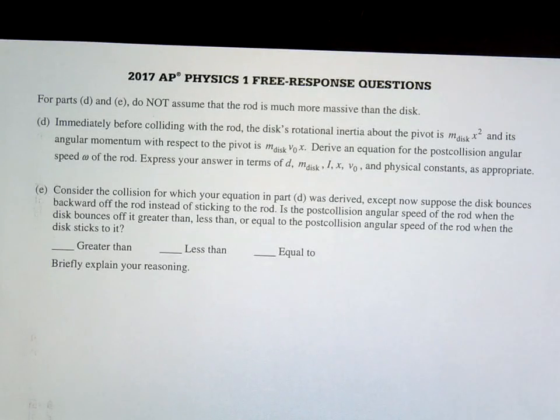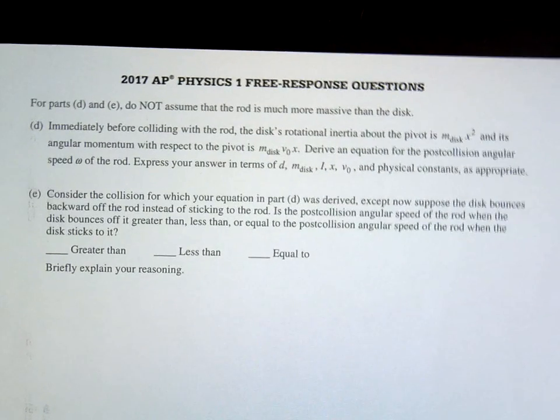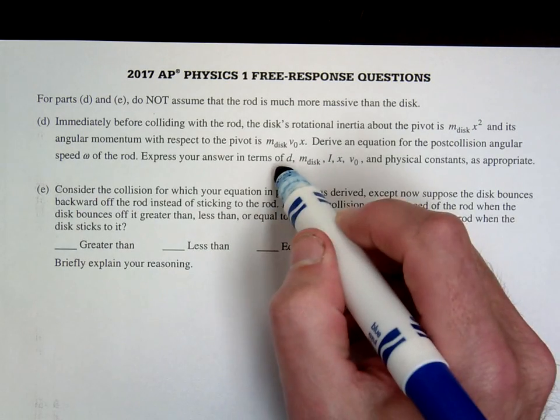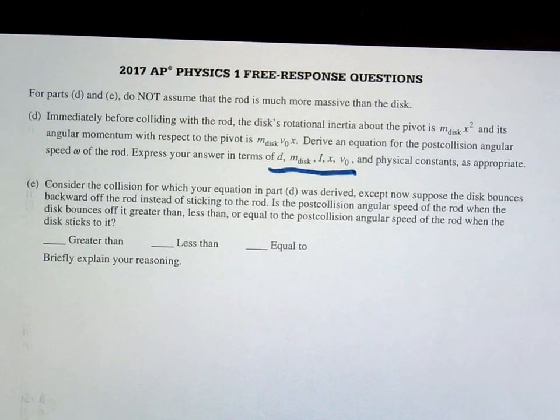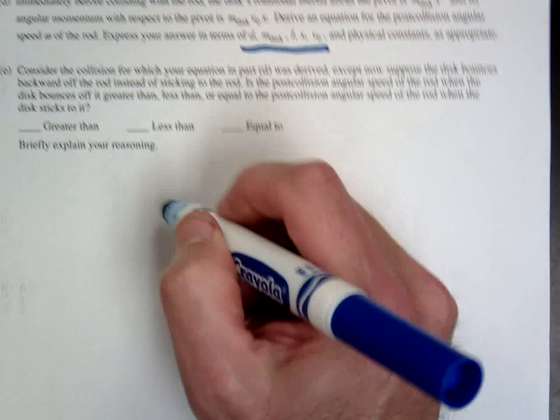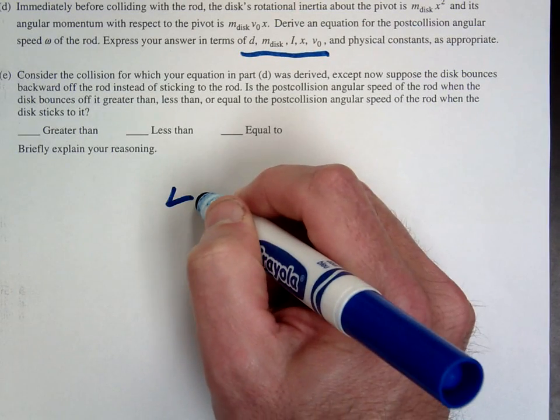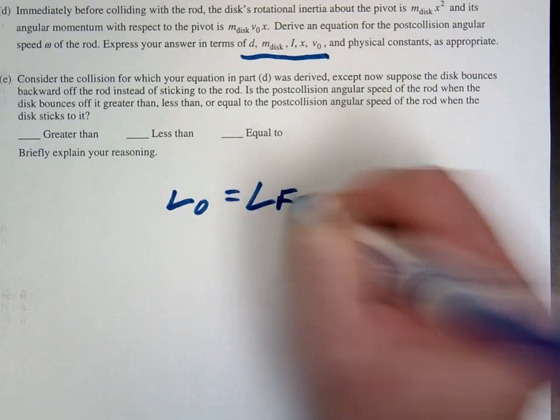Alright, letter D. So now we're just going to go ahead and derive the equation for this. We're just going to use variables. So just make sure that your answer is only expressed in the terms they provide. So in this one, we're just going to be using conservation of momentum. So L initial should be equal to L final.